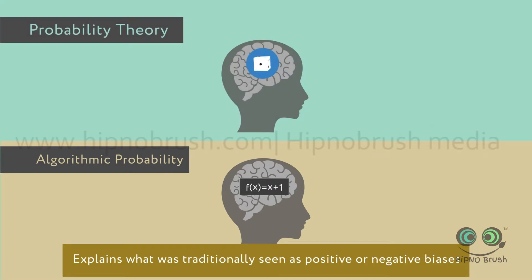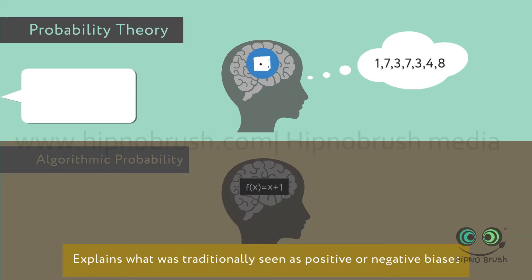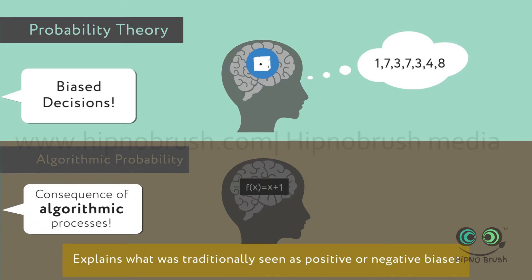For example, humans will tend to find patterns in random data that the traditional view would mostly account for in the form of biased decisions based on past experiences, rather than as a consequence of an algorithmic process of the mind trying to find sense and logic even when there is none.